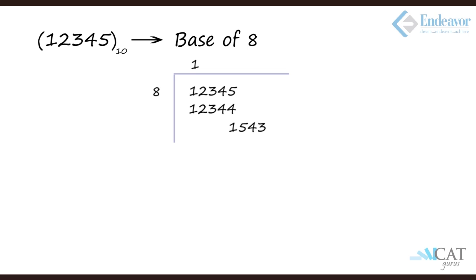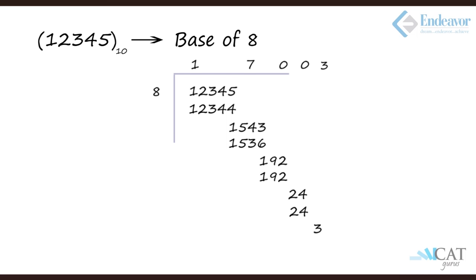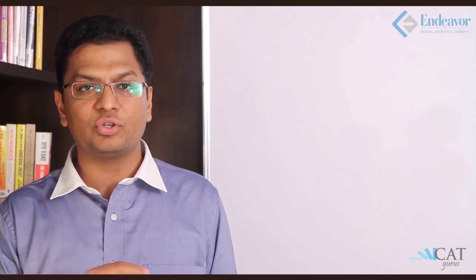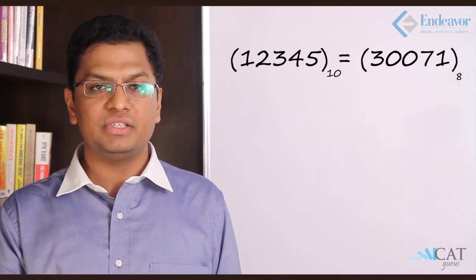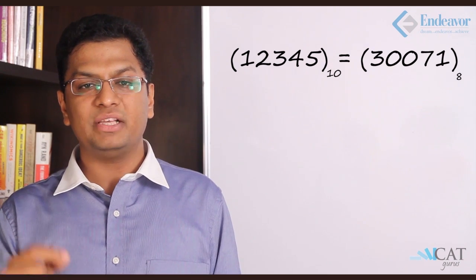Dividing 1543 by 8 gives quotient 192 and remainder 7. Continuing this process, the remainders collected from top to bottom are 1, 7, 0, 0, 3. Reading these remainders in reverse order gives 30071 — wait, reversing 1, 7, 0, 0, 3 gives 30071 — written properly as 30071 in base 8, which equals 12345 in base 10.